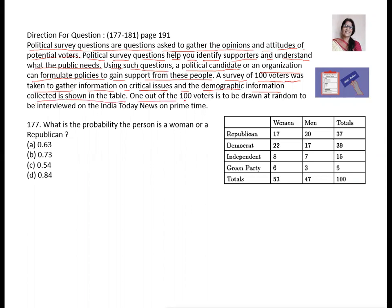One out of 100 voters is to be drawn at random to be interviewed on the India Today news on prime time. So there are 100 voters to gather some information about the critical issue. It is given in the table in different categories.